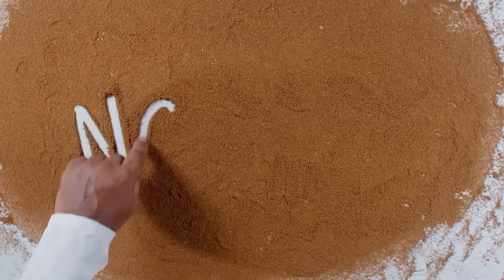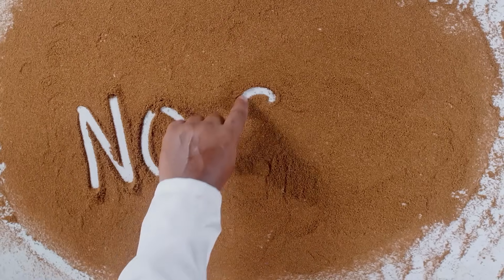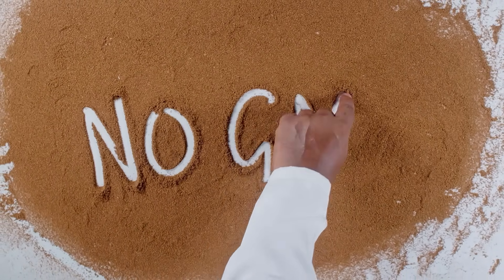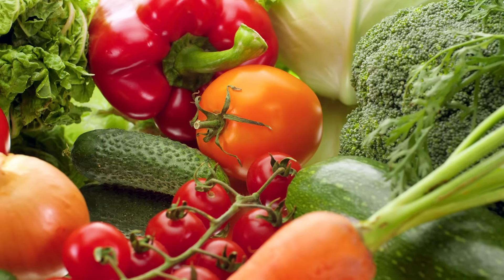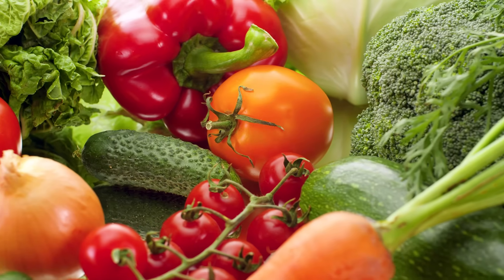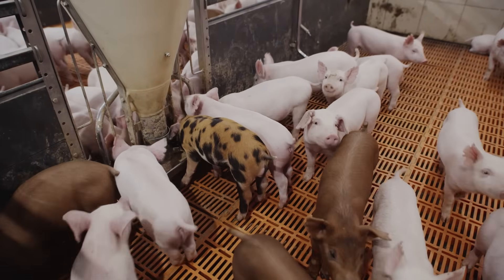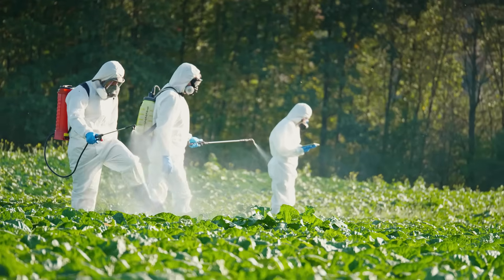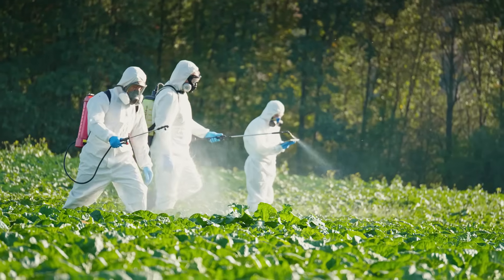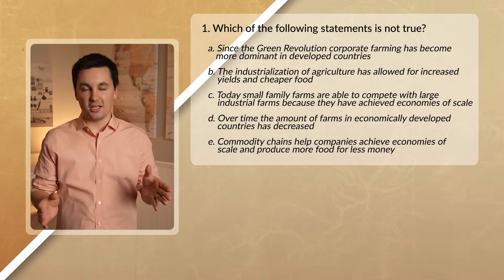These changes in agriculture have led to some recent debates on how we as a society should produce food. On one hand, we are producing more food than ever before. But on the other hand, we are also starting to see the consolidation of farms, concerns over animal rights and worker rights, and more chemicals and antibiotics being used to produce our food. But that debate is for another day.